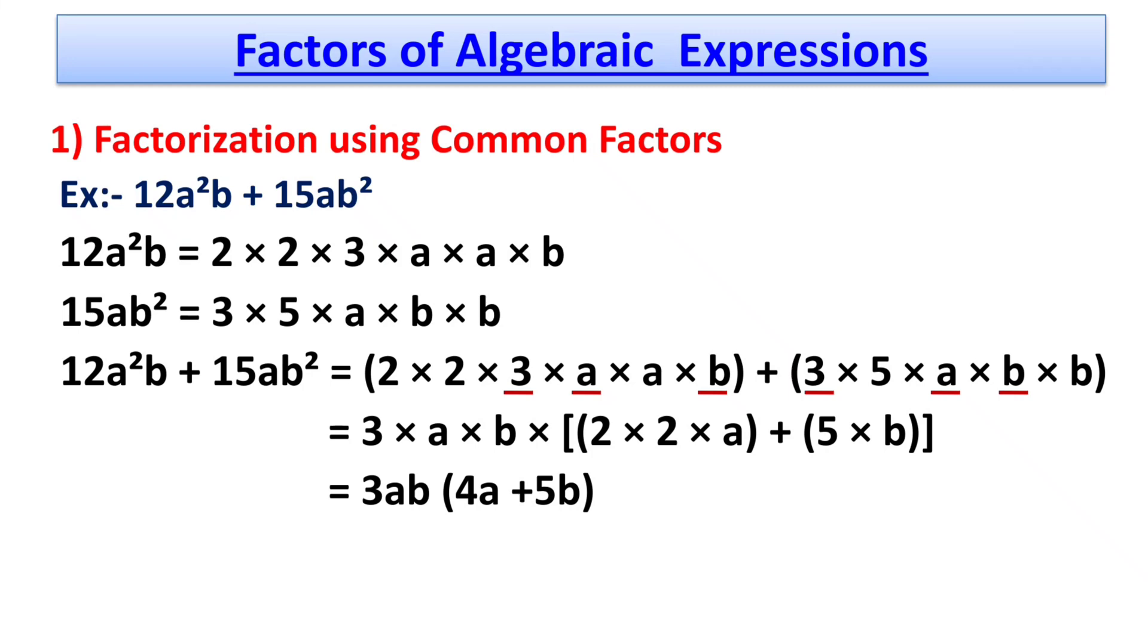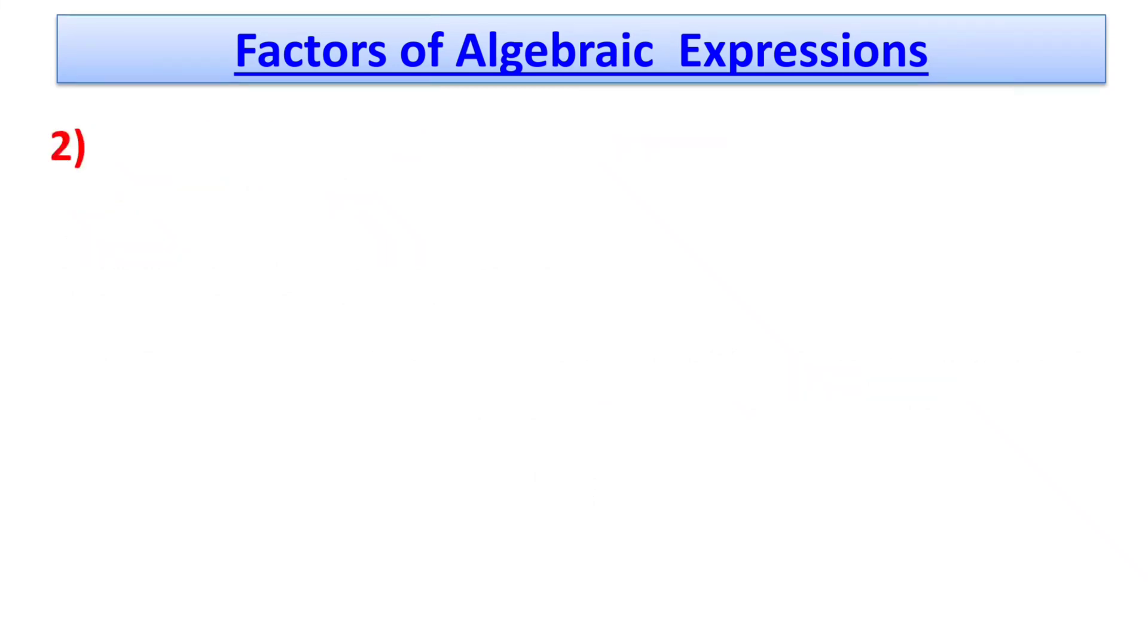These are the factors of 12a²b + 15ab². This is the method of factorization using common factors. In some algebraic expressions, not every term may have a common factor. For that, we have to use the second method which is factorization using regrouping terms.